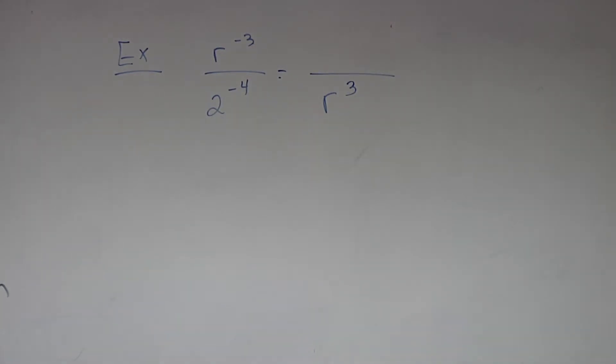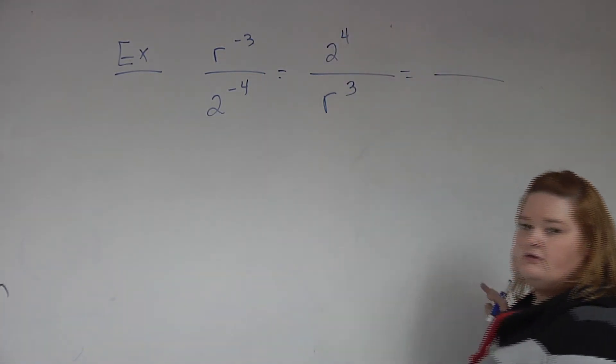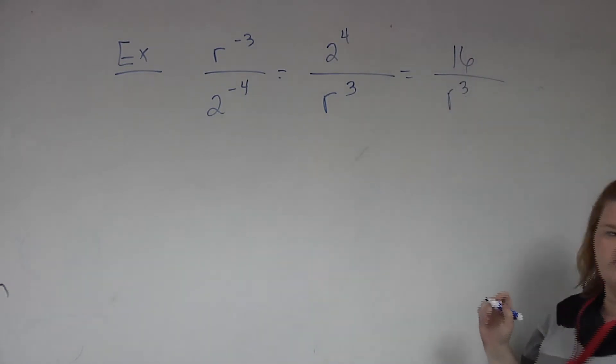Now the 2 to the negative 4. To make it a positive exponent, where is it going to end up? On top. And what's it going to look like? 2 to the 4th. 2 to the 4th over 2 to the 5th. And there's your answer.